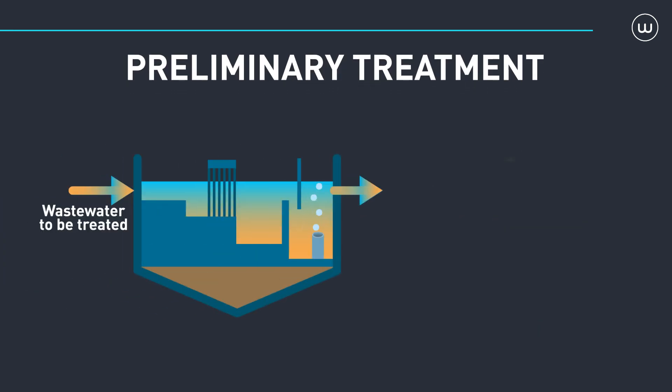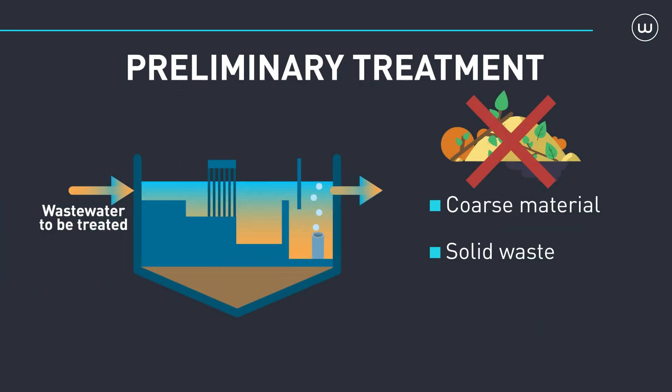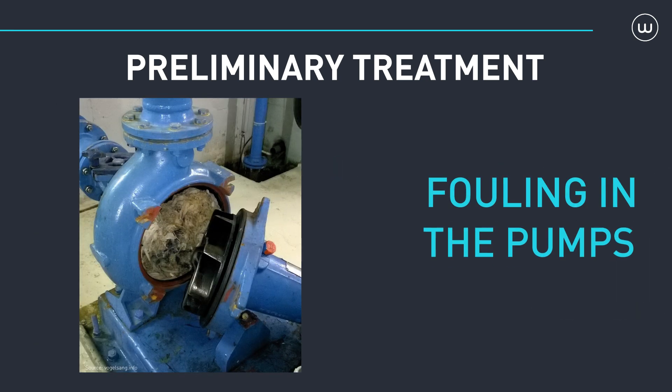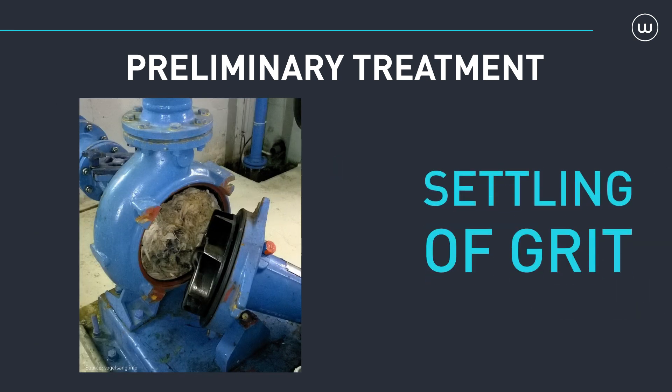The aim of preliminary treatment is to remove coarse material, solid waste, grit, and potentially FOG — fats, oils, and grease. This stage is essential because if this waste is not removed, it can negatively affect the operation of plants' installations and electromechanical equipment. For example, it can cause fouling in the pumps or settling of grit, which compromises the overall effectiveness of wastewater treatment.